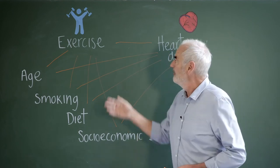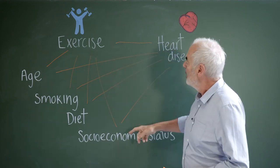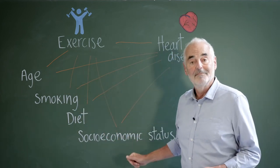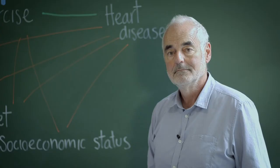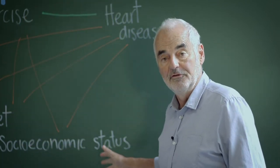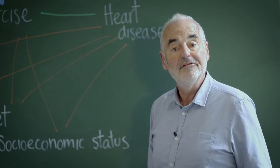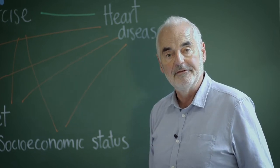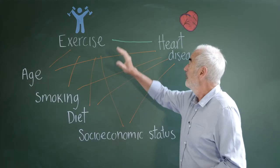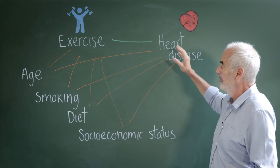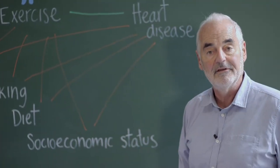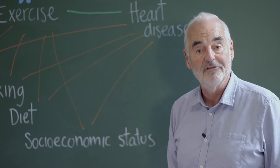So what we really want to do is estimate this relationship while keeping these confounding factors fixed. So how do we do that? Well, we have to collect data on all these factors on a group of individuals and then use a statistical method called regression analysis. This allows us to estimate the relationship between two variables such as exercise and heart disease while keeping these other confounding variables fixed, and this is what is known as adjustment.